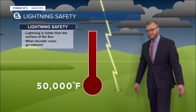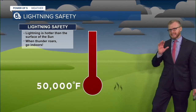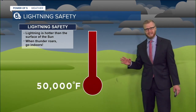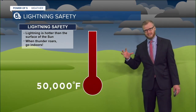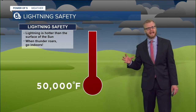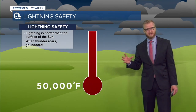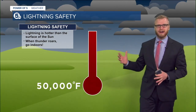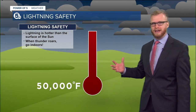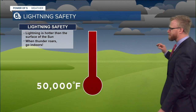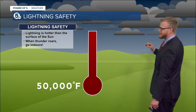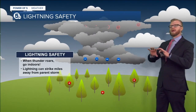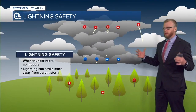Lightning strikes are 50,000 degrees Fahrenheit. To put that in perspective, the surface of the sun is about 10,000 degrees Fahrenheit — so five times hotter than the surface of the sun. Incredibly hot. You don't want to touch it. Lightning is super dangerous, so we want to get away from it.